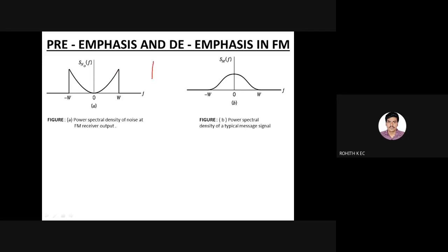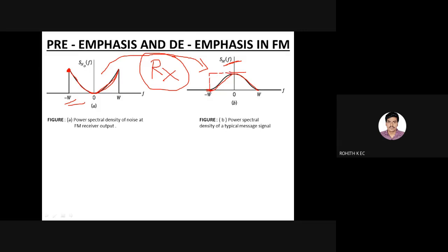The power spectral density of noise at the FM receiver output shows that at minus W there is more noise power. By the time it reaches zero frequency it has decreased, and again at plus W it has increased. This is exactly reverse to the power spectral density of the message signal — at minus W it is almost zero, at zero frequency it is high, and at plus W it is again low. Ideally the message PSD should be a flat rectangle and the noise PSD should be a very small flat line, almost zero. To overcome this practically observed problem, we go for pre-emphasis and de-emphasis circuits.